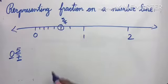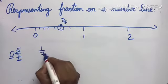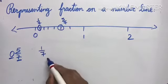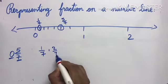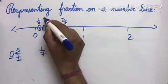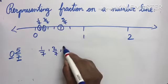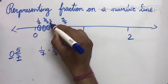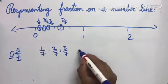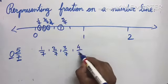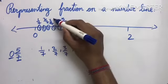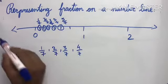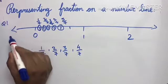Similarly, 1/7 falls at the 1st part, 2/7 at the 2nd part, 3/7 at the 3rd part, and 4/7 at the 4th part — all between 0 and 1 on the number line, dividing it into 7 equal parts. This completes question number 1.